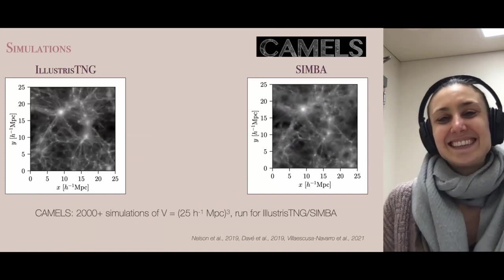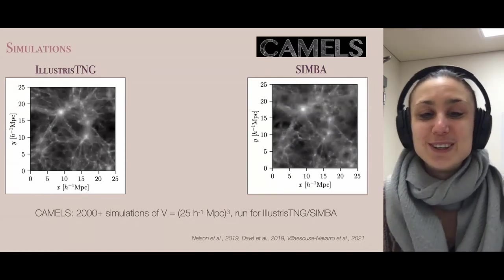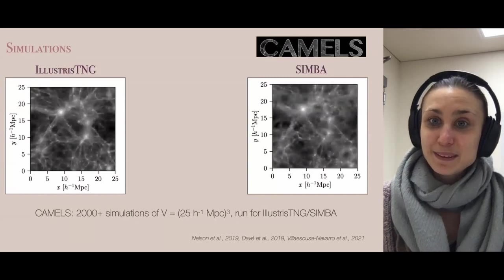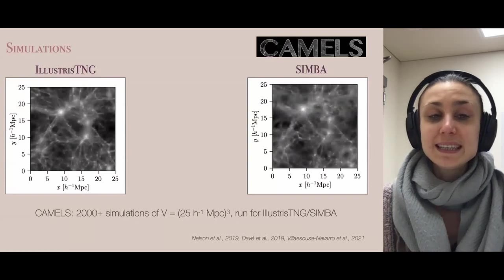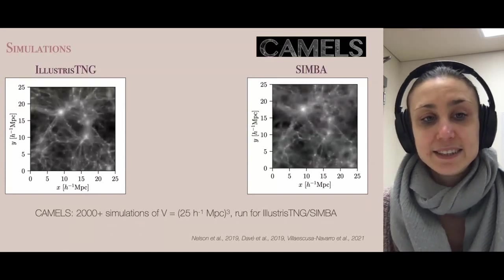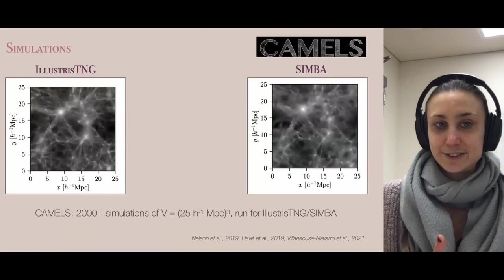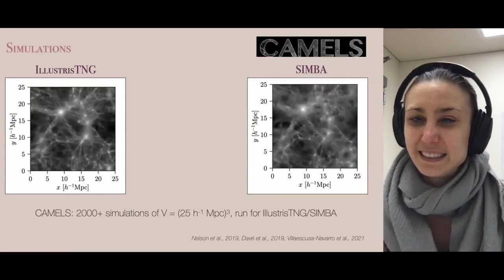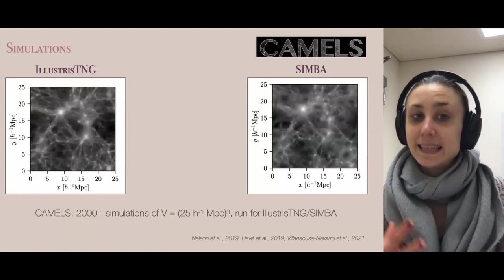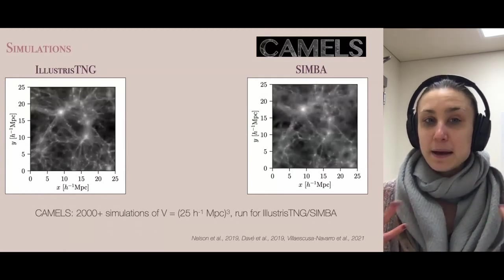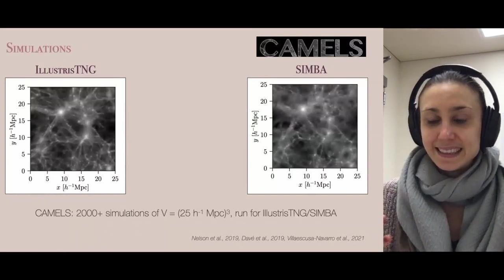Since we're talking about CAMELS, to answer this question we worked with the CAMELS suite of simulations — an exciting suite of small-volume hydrodynamical simulations run by Paco. CAMELS has been run for two different subgrid physics models: IllustrisTNG and SIMBA. On this slide you can see the electron distribution for exactly the same cosmological parameters: IllustrisTNG on the left and SIMBA on the right. The electron distribution in SIMBA is actually significantly more diffuse than in IllustrisTNG.